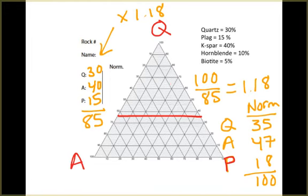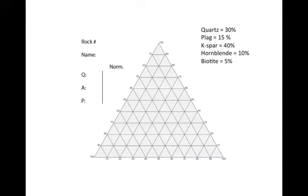Plagioclase, we have about 18%. This line here represents 0% plagioclase. We'll count 10 and then 18 right about there. They intersect at a single point, and that intersection point is the point on the IUGS diagram that we're going to use to be able to name the rock.